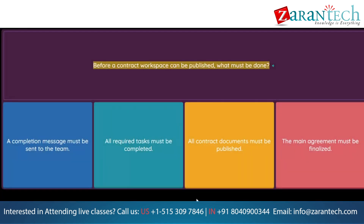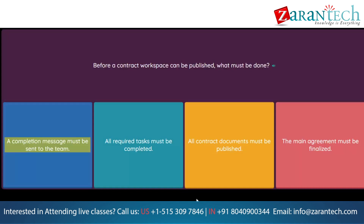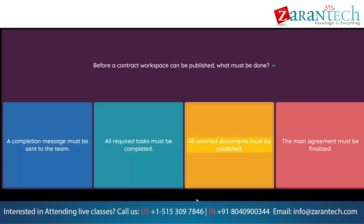Question: Before a contract workspace can be published, what must be done? Option 1: A completion message must be sent to the team. Option 2: All required tasks must be completed. Option 3: All contract documents must be published. Option 4: The main agreement must be finalized.